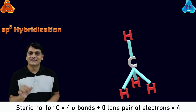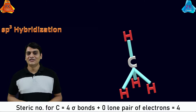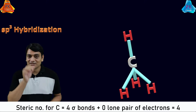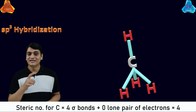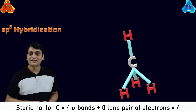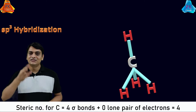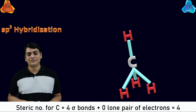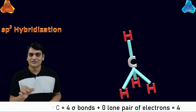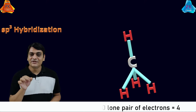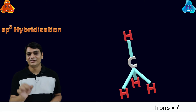A steric number of 4 means 4 orbitals are involved — that is one s orbital and three p orbitals. That's why carbon in methane shows sp3 hybridization.